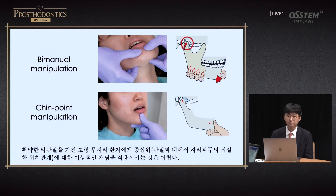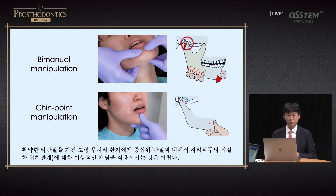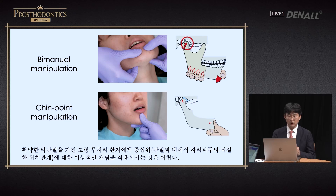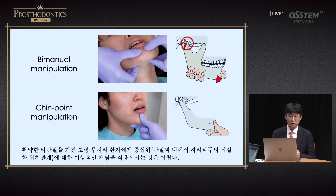In old textbooks on complete dentures, bimanual manipulation is used to take CR in patients with teeth, or chin point manipulation is used to apply force on the chin, feeling the rotation as closing of the mouth is induced. For patients with normal TMJ, there will be no problem as the condyle is pushed backward just slightly. However, for patients with a lot of gap in the TMJ, if we apply force using chin point manipulation, the condyle will be pushed backward too much.